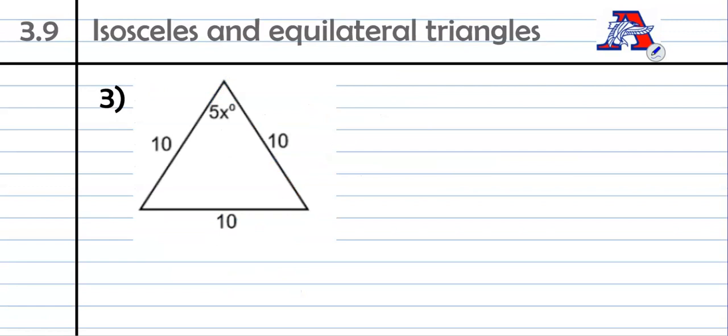And then last example here. This is an equilateral triangle, right? Equilateral or equiangular. If all three sides are the same, then all three angles are also the same. So if one of them is 5x degrees, well, then all three of them are 5x degrees. And then the question is, well, what is x?